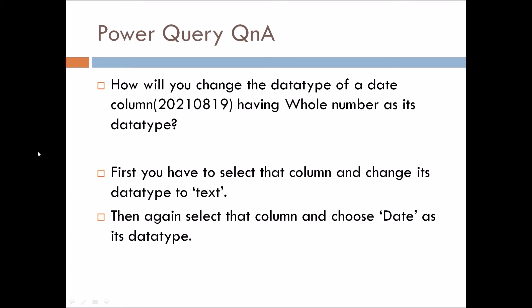This is a very basic question asked in interviews, but many fail to answer it. Suppose you have a column formatted as 20210819, with a data type of whole number. The number represents a date value, and you want to convert it into a date column. The first thing you have to do is select that column and change its data type to text. Then, select that column again and choose Date as its data type. In this way, you can convert a whole number column to a date column.